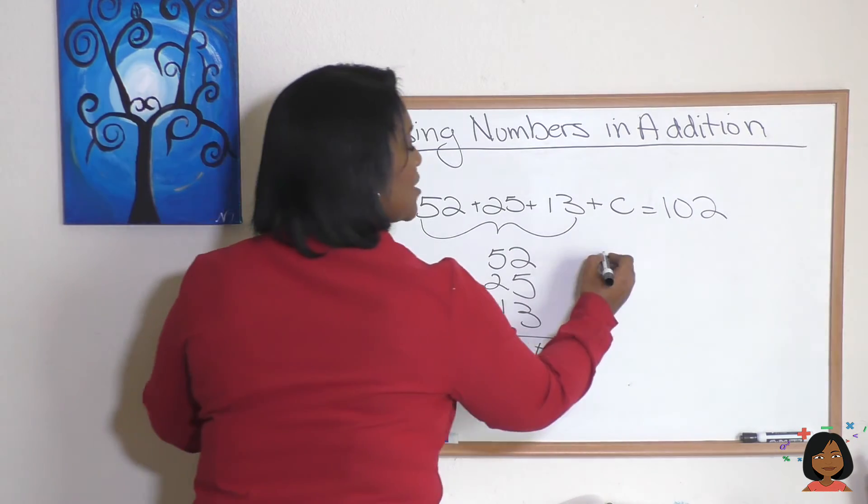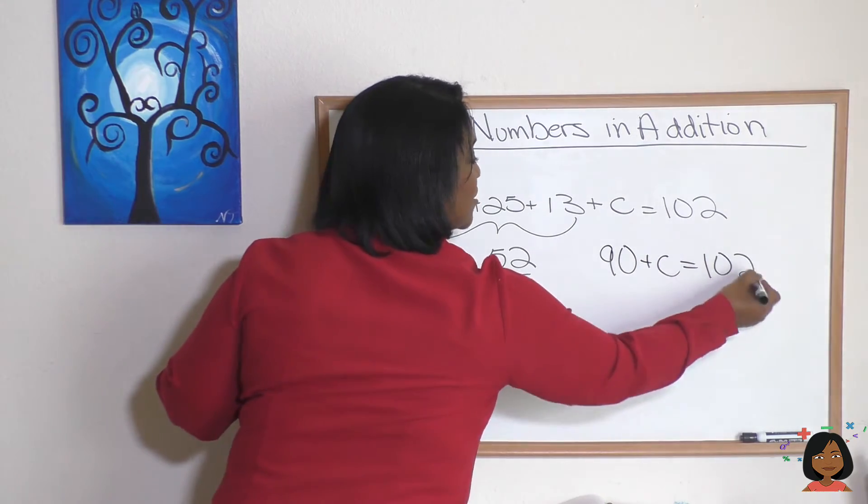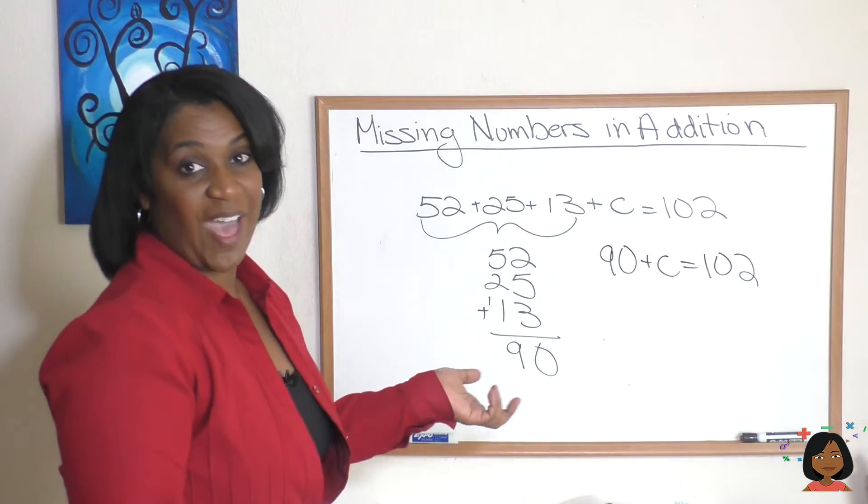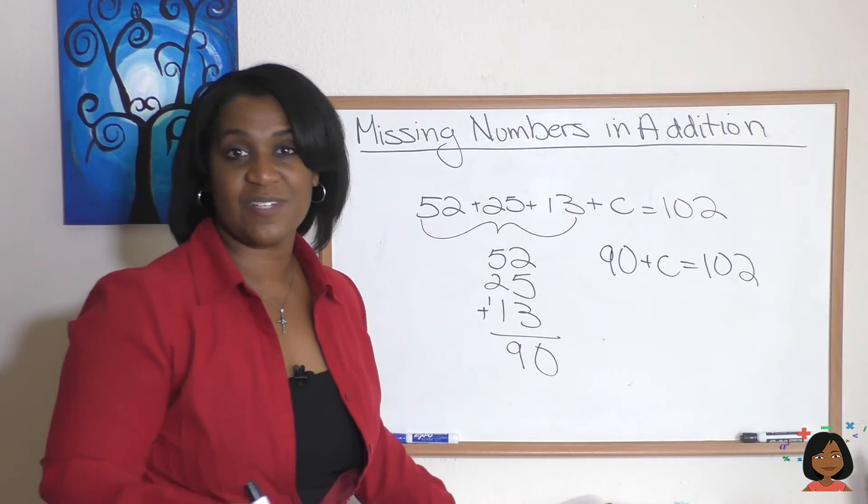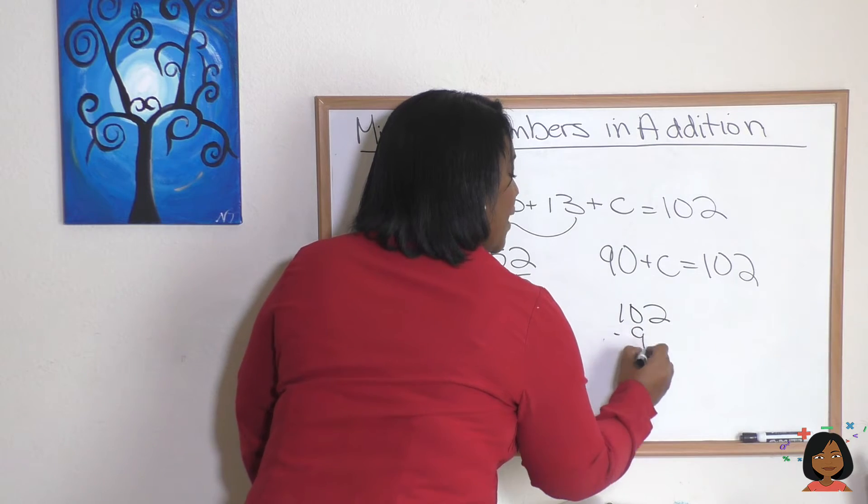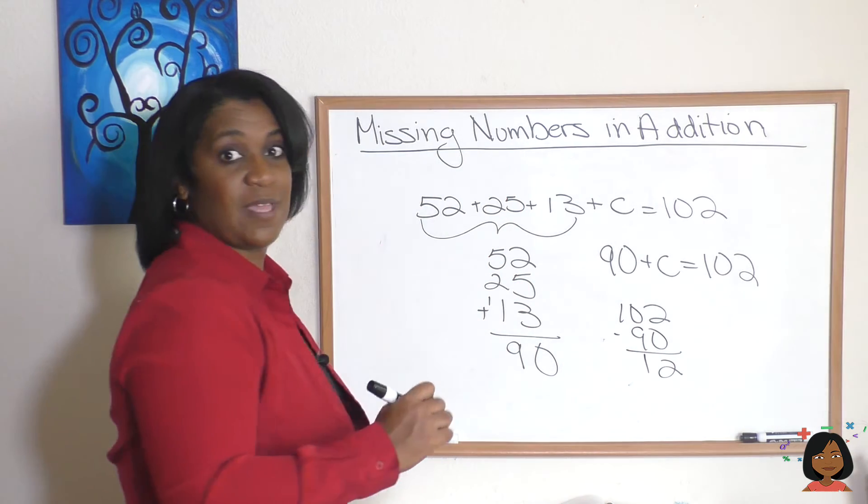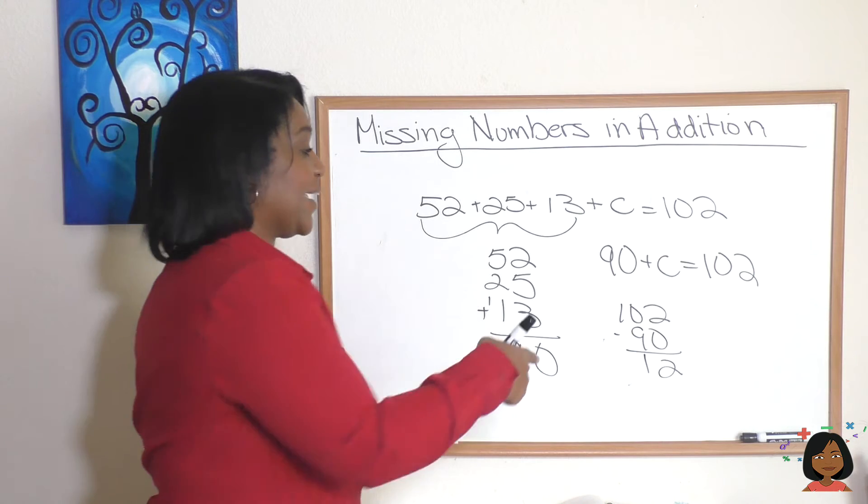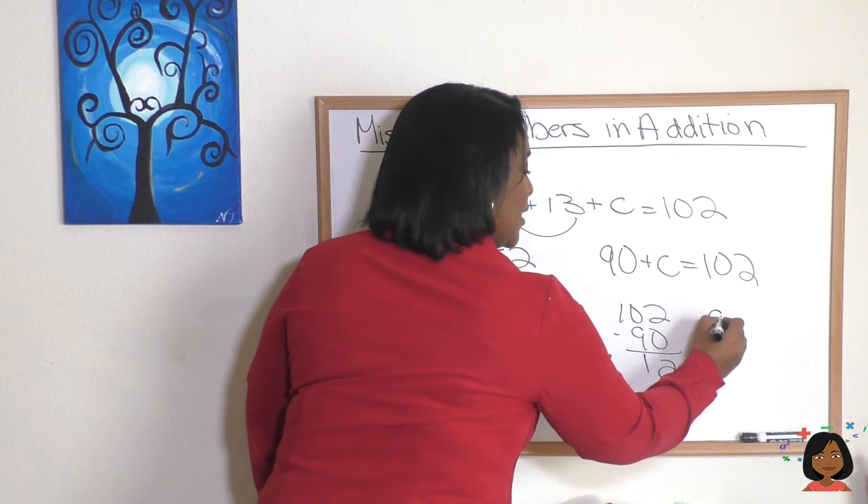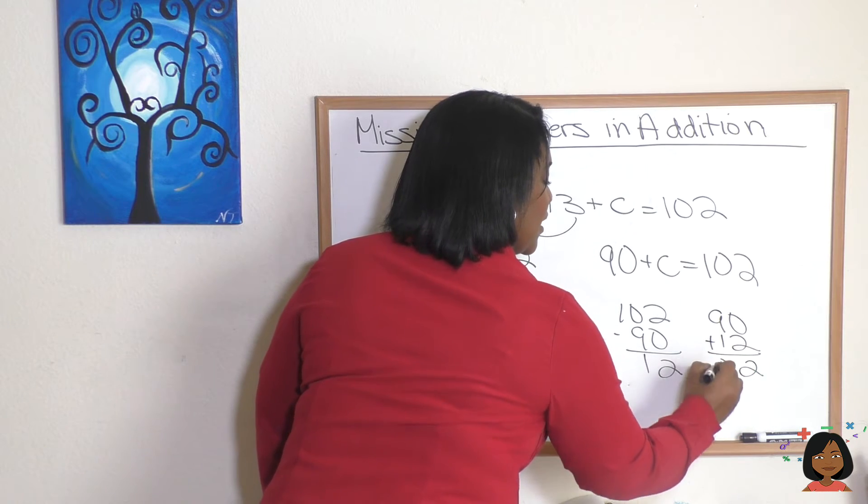So this really is the same thing as saying 90 plus C equals 102. And we know what to do with that. We're going to do the opposite of addition, which is subtraction. 102 minus 90 is 12. Let's check it. I put it back into this equation. 90 plus 12 is 102.